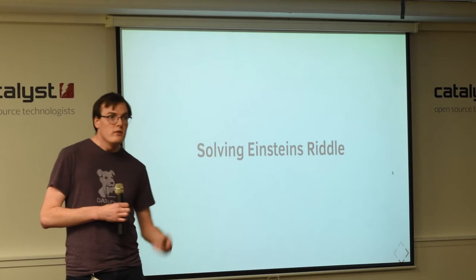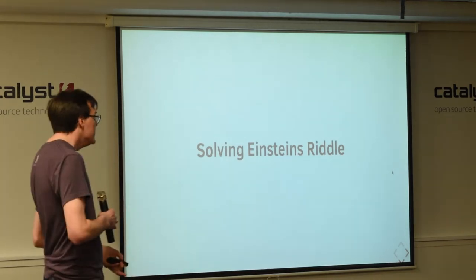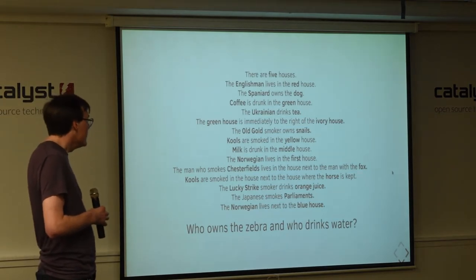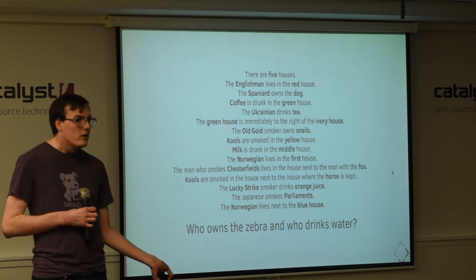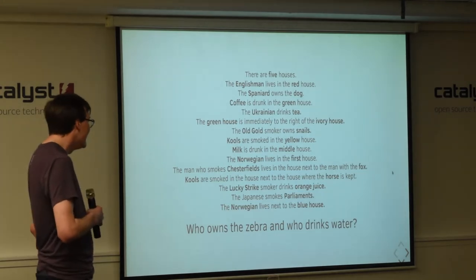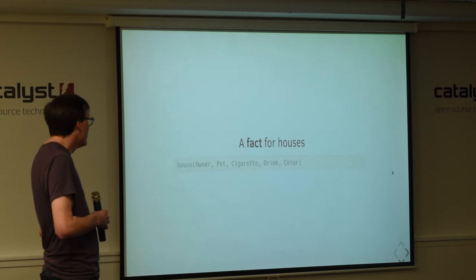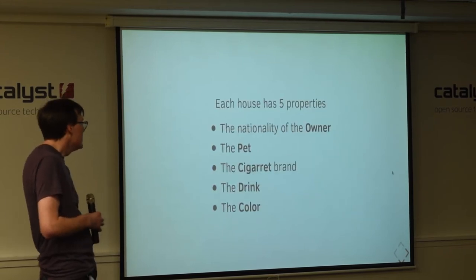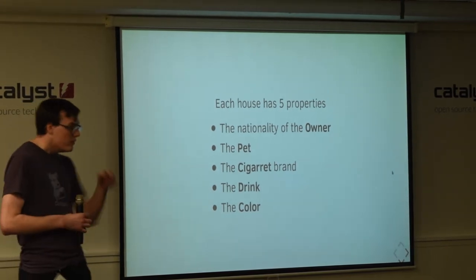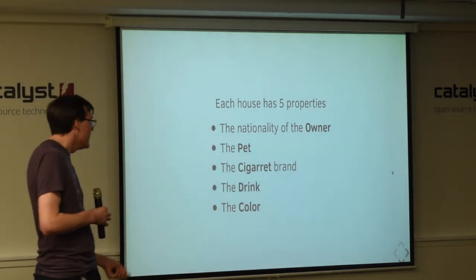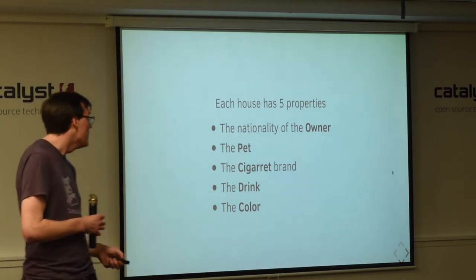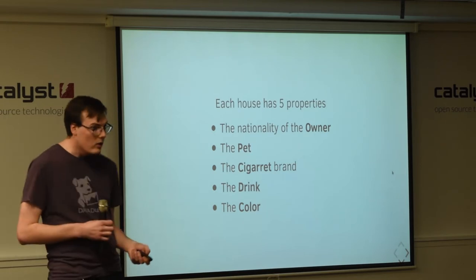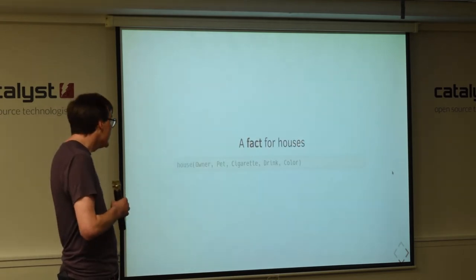So, we can use all of these constructs that I've introduced to start reasoning about Einstein's riddle. So, I've just put it up again. Does anybody want me to go through it all the way from the top? No? Cool. So, each house has five properties. There is the nationality of the owner, the pet that lives in the house, the cigarette brand that the owner prefers to smoke, the drink that the owner prefers to drink, and the color of the house.